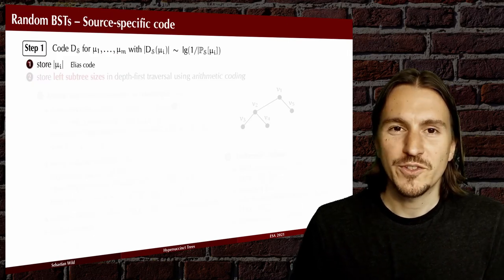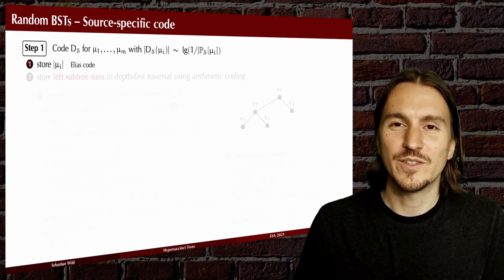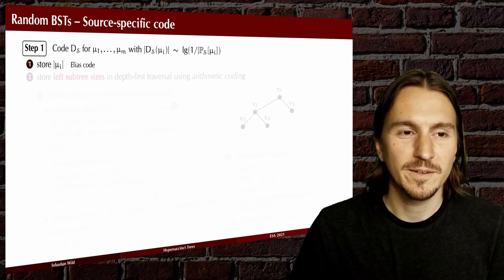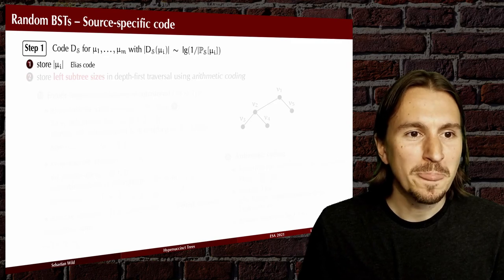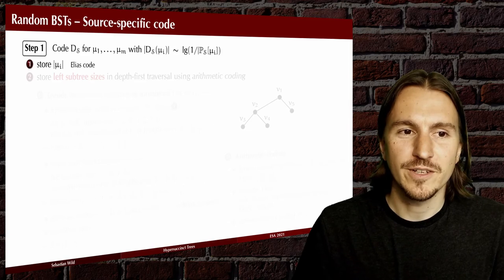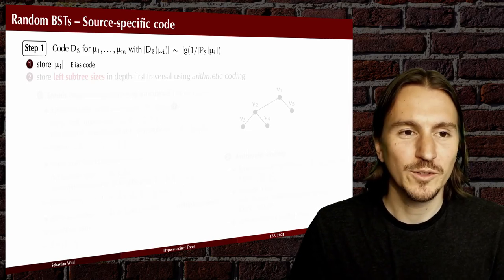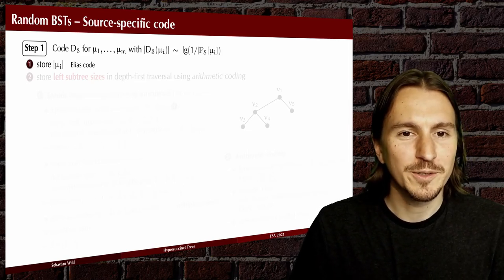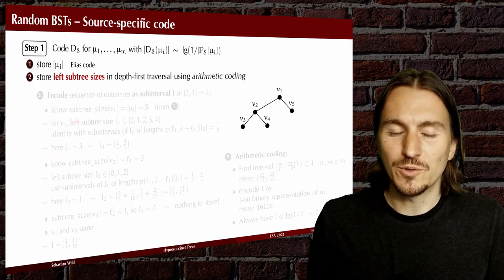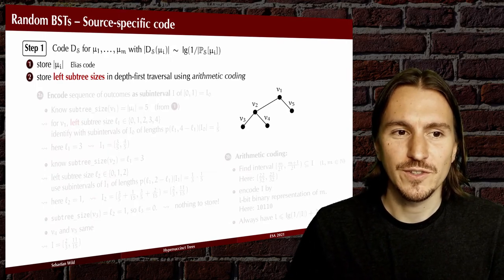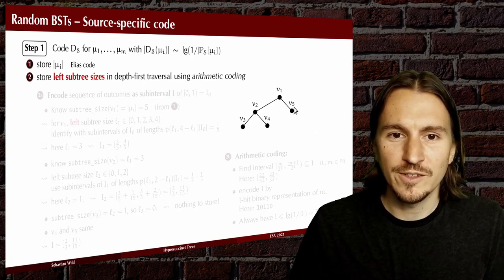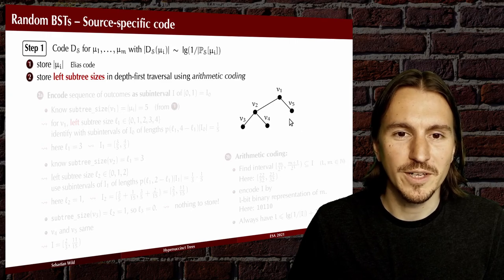How can we construct a source-specific code that optimally compresses a random binary search tree? We first store the size of the current micro tree in a self-delimiting code like Elias gamma, then use arithmetic coding to store all the left subtree sizes. We proceed in a depth-first traversal of the tree. As in arithmetic coding, we represent the sequence of outcomes as a subinterval of the unit interval [0, 1].